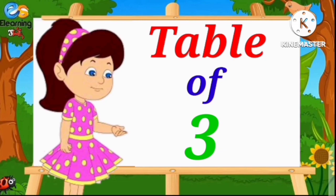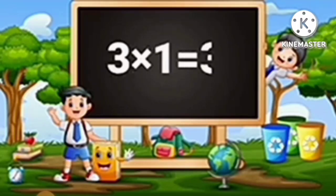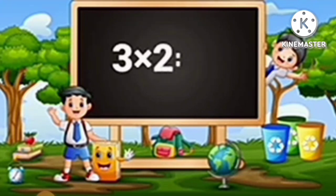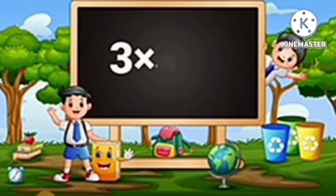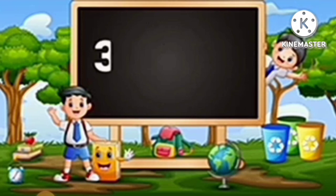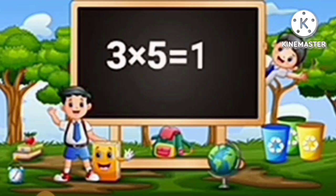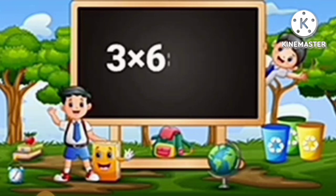Table of 3: 3 ones are 3, 3 twos are 6, 3 threes are 9, 3 fours are 12, 3 fives are 15, 3 sixes are 18.